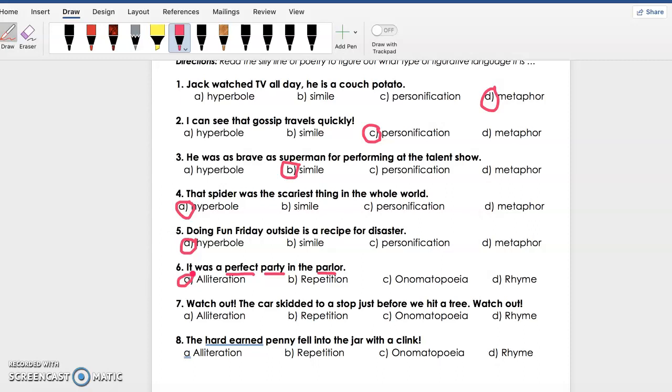Seven: Watch out! The car skidded to a stop just before we hit a tree. Watch out! So we see that watch out and watch out are being repeated throughout. That shows repetition.